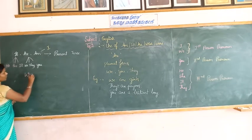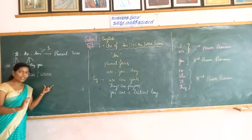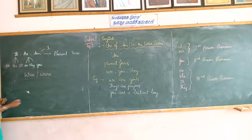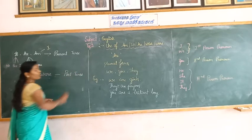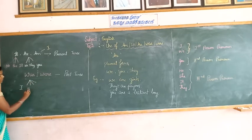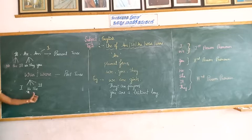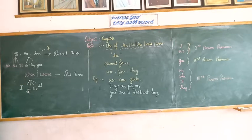Now we are discussing about 'was' and 'were'. Was and were are also called helping verbs, be forms, and auxiliary verbs. But these two are used in the past tense. 'Was' is used with I, she, he, it — first and third person singular. We are using 'was' in past tense form.